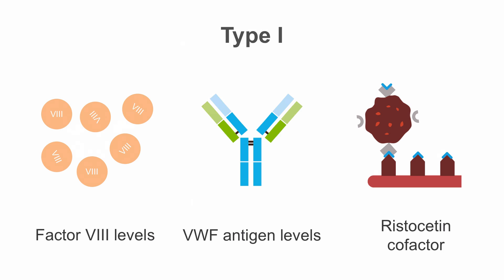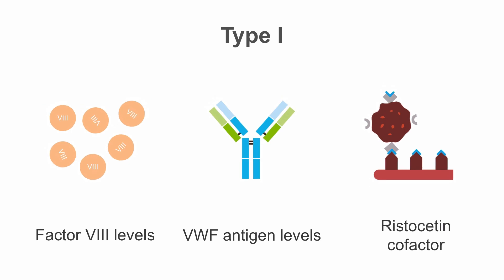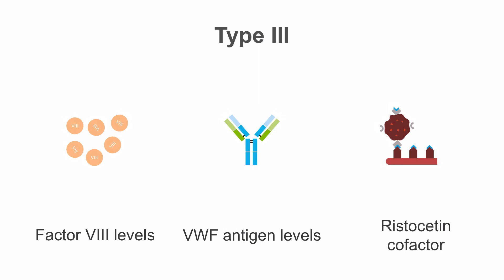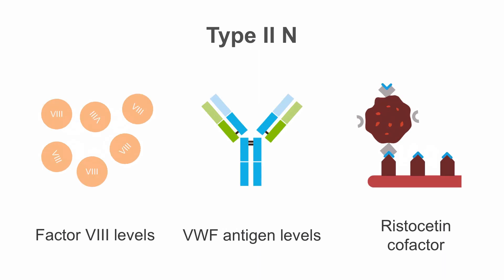Type 1 von Willebrand's disease is a mild abnormality. In this type there is mild deficiency of all three levels tested. In type 3 there is severe deficiency of all three factors. In type 2, results vary according to the subtype.